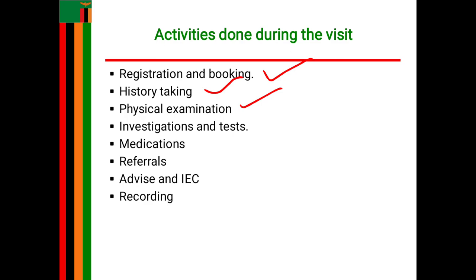From the lower limbs you move to the abdomen. In abdominal examination you want to confirm the pregnancy, assess the presentation and lie of the fetus, and assess fetal well-being. The methods used are inspection, palpation, and auscultation.